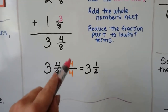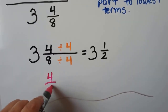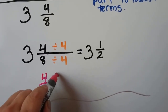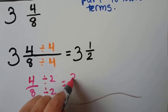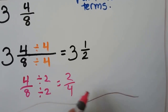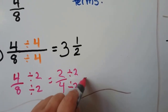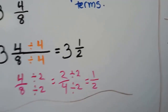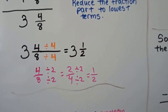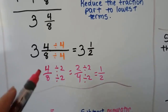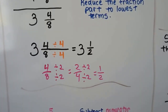We can divide the 4 by 4 and the 8 by 4 — we find the largest number that we can divide them by, so we don't have to reduce so much. That's going to give us 3 and a half. If we had divided both by 2, we would have gotten 2 fourths, and then we would have had to divide by 2 again to get one half. So by dividing by the largest number we can, we don't have to reduce as much.